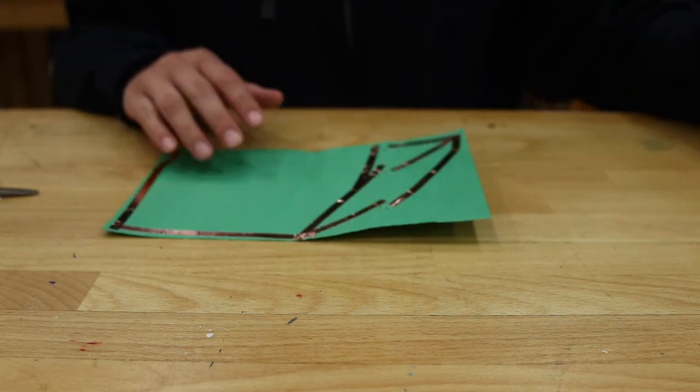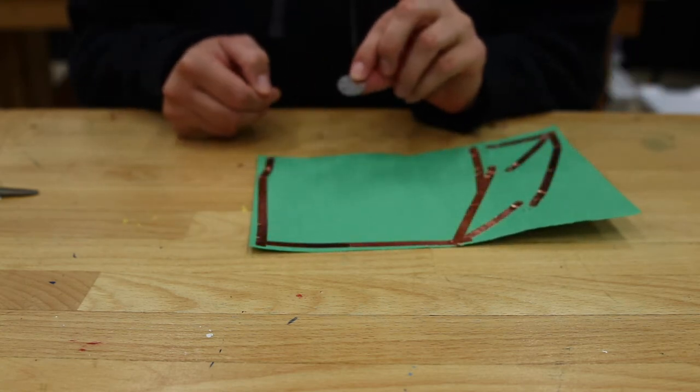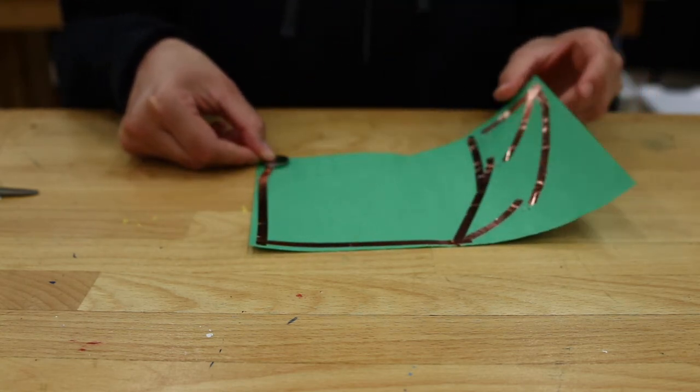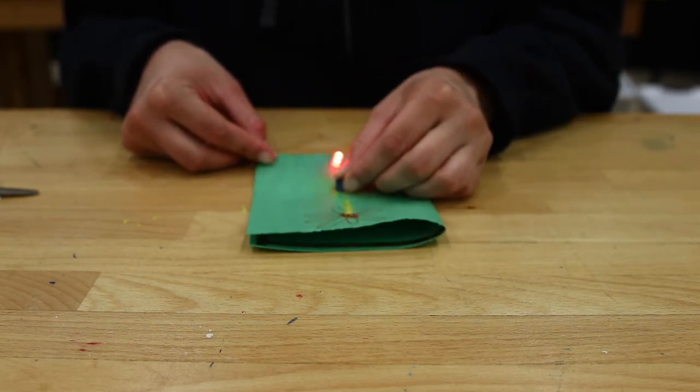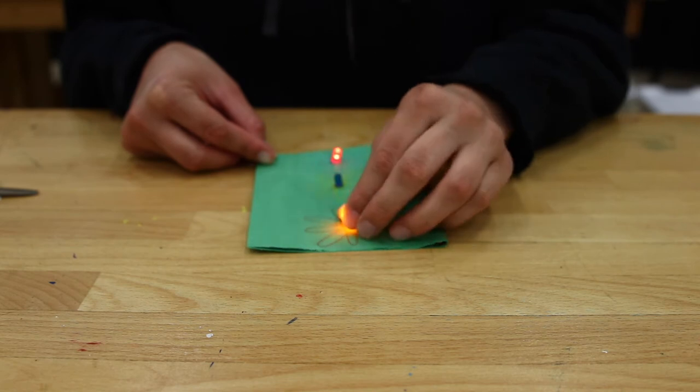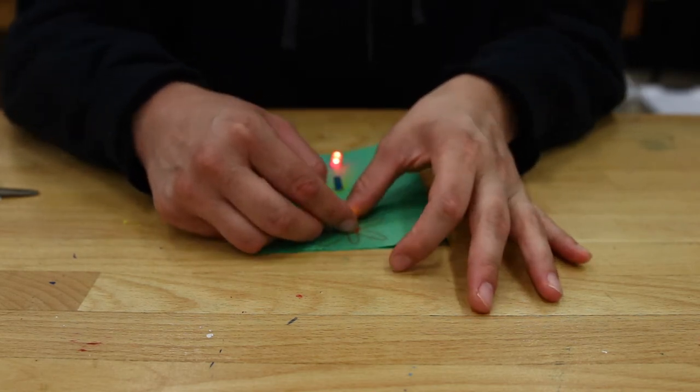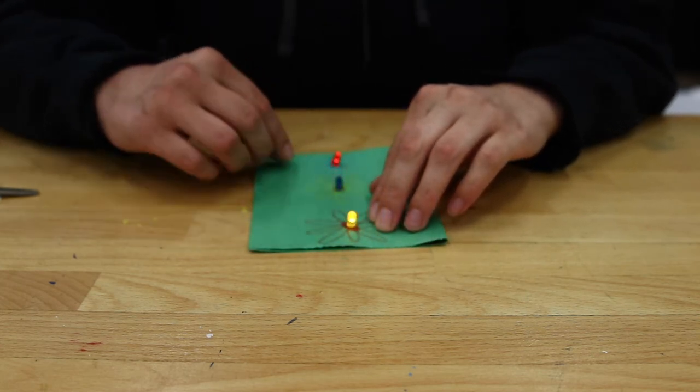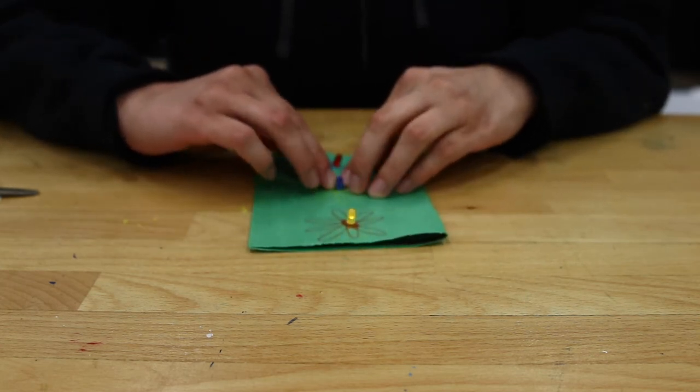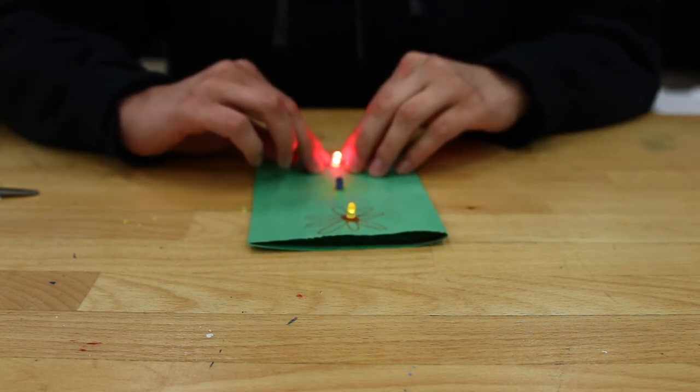Now we can test our current. Grab your coin cell battery and place it at the end of your negative line in the bottom-right corner of your card. Place the battery so that the plus symbol is facing up. When we close the card, our LED should light up. This happens because the positive current from our battery meets up with our taped channel for the positive current on the other side of the card. The negative current is already running through the underside of our battery.